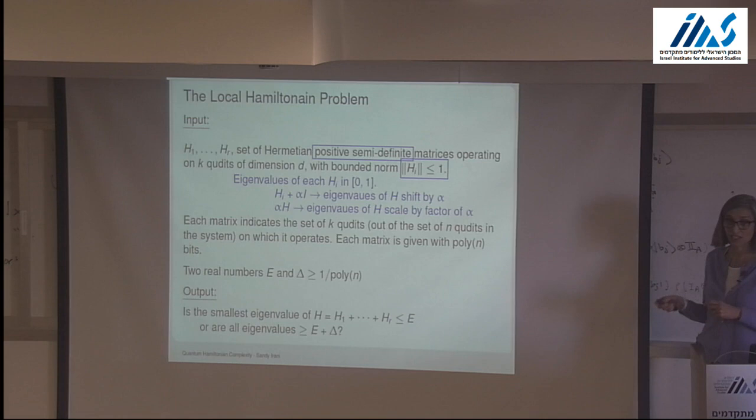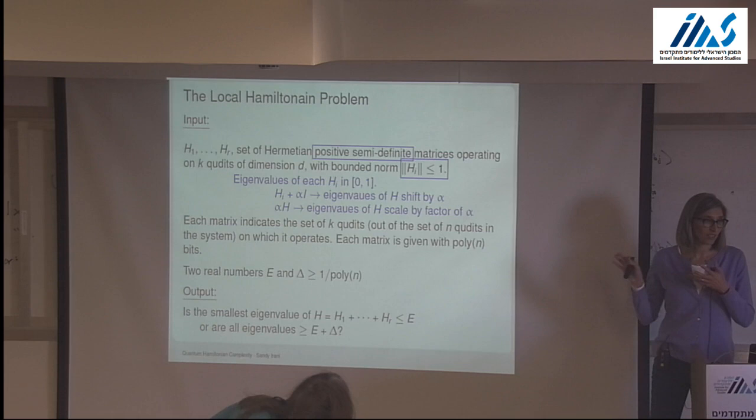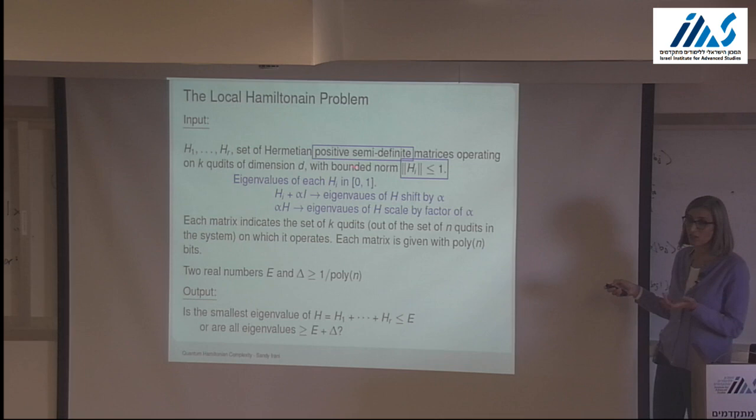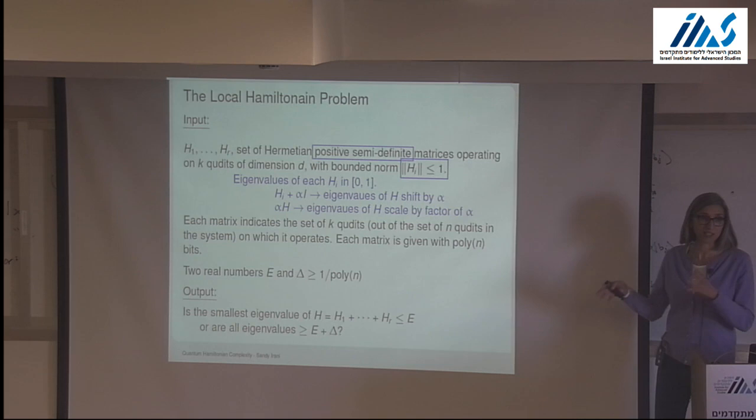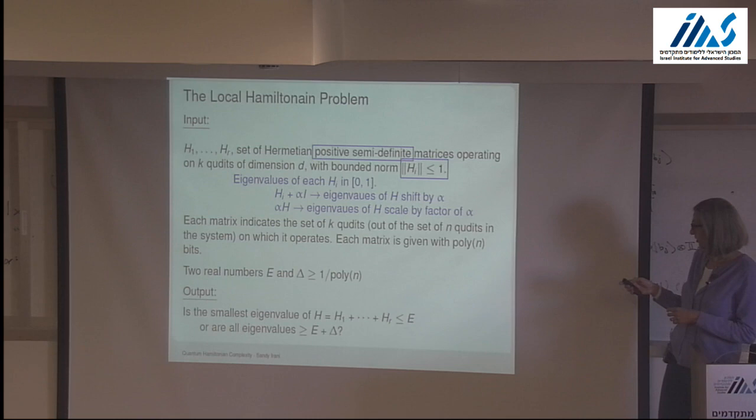We can justify the positive semidefinite and bounded norm conditions: by adding a multiple of the identity (which just shifts eigenvalues) or multiplying by a constant (which scales them), we can adjust any Hamiltonian term to achieve these conditions. This is just a normalization convenience.